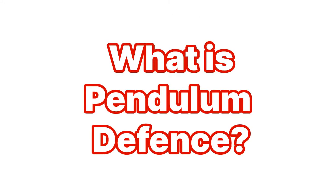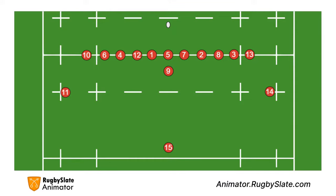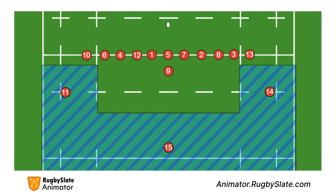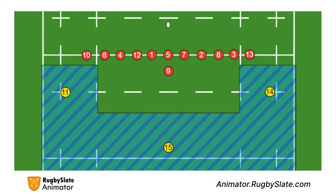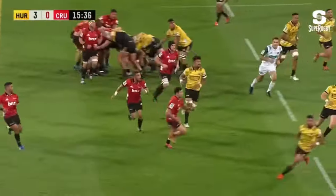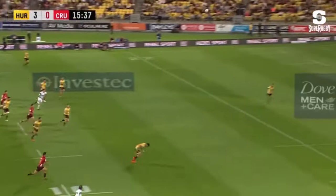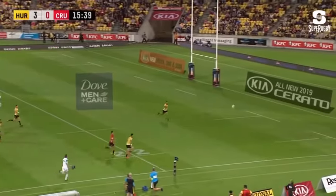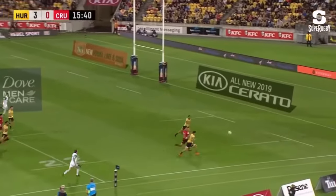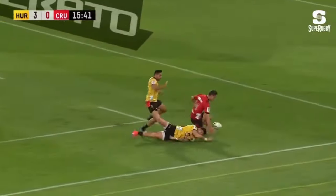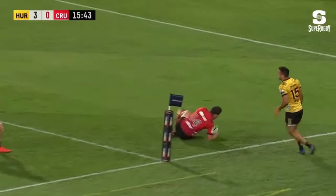So, what is the pendulum defence? It's a defensive system for defending the backfield and edges of the field. It mainly involves the two wingers and the 15, known as the back three, but it's important that all players understand it as they might be needed to fill in. Also, by understanding the pendulum defence, you'll be able to spot when the opposition aren't using it correctly, and will be able to exploit it.